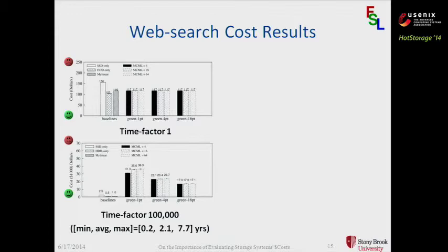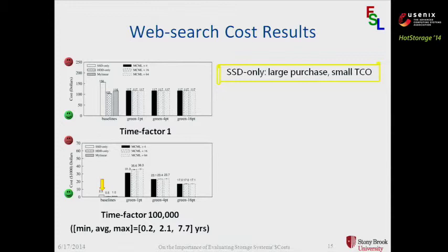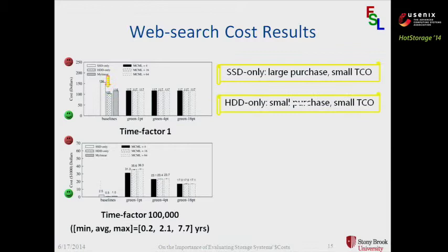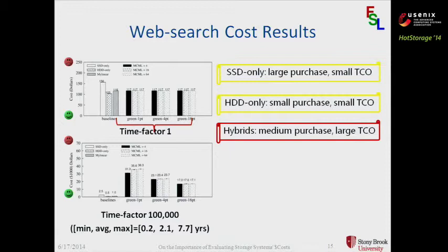Time factor 1 is a short-term cost. Time factor 100,000 is translated to 2.1 years on average across all conditions. For SSD-only drive, we can see it has large purchase cost and small total cost of ownership. SSD is expensive to purchase, but in the long term, since it doesn't do data migrations and data management, it doesn't incur too many SSD accesses. For HDD-only drive, it has small purchase cost and small total cost of ownership. The hybrids have medium purchase cost and large total cost of ownership because they incur data migrations for hot and cold data management. We can easily see that GreenDM actually costs more than the naive tiering system.